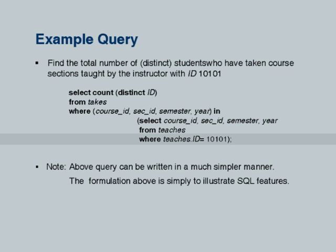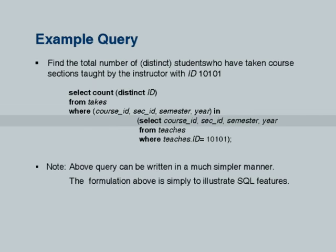First let us look at the subquery: FROM teaches WHERE teaches.id equals 10101. This gives all the sections taught by this person. A section is uniquely identified by course ID, section ID, semester, and year — these four attributes together form a primary key of section. The same course may be offered in different years or semesters, and within a single semester and year, there can be two sections. In the takes relation, a student has taken a particular course in a year, semester, and section. We check if this whole combination is present. This is similar to the previous query, except instead of one attribute you have a tuple of attributes. This can also be done using intersection.